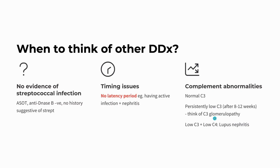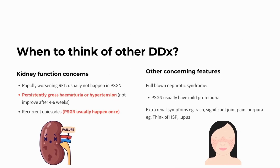Do let me know in the comment section if you want to know more about C3 glomerulopathy — I can make another video about it. If the patient has both low C3 and low C4, think about lupus nephritis or renal involvement of SLE. If you want more information about this, let me know in the comments. If kidney function is very bad, or there is persistently gross hematuria or hypertension not improved after four to six weeks, think about other differential diagnoses. If the patient has recurrent episodes, think about other differentials because PSGN usually happens only once.